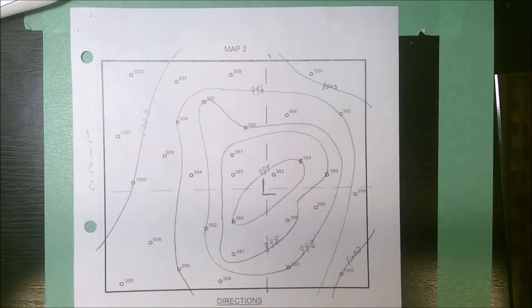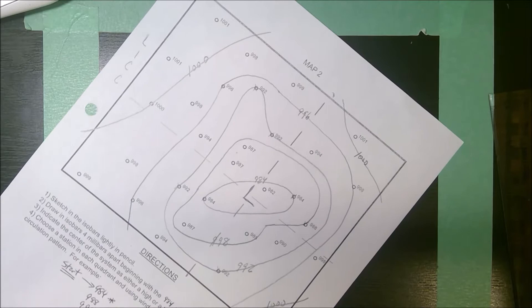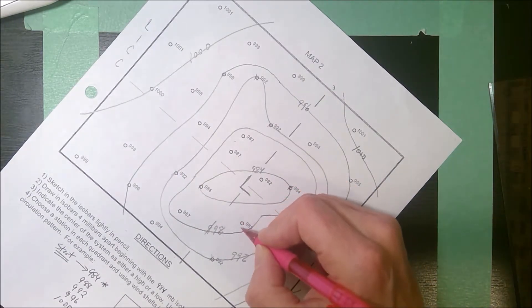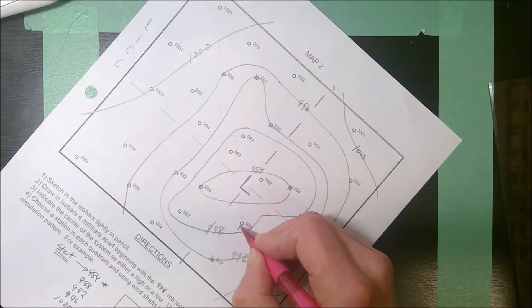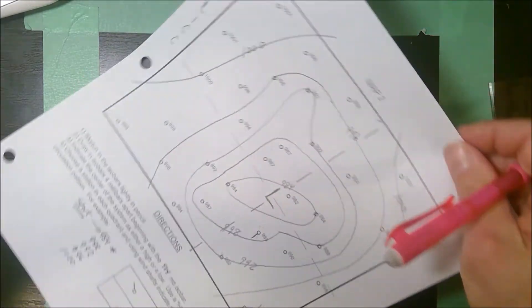So for all of these, the winds blow from the higher isobar towards the lower isobar. I may as well pick this 985. This one I'll just draw pressure gradient, bend to the right for the Coriolis, and there it's going counterclockwise and towards the center.